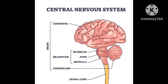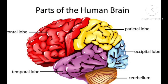The cerebrum is divided into four lobes. The names of the lobes are: frontal lobe, parietal lobe, temporal lobe, and occipital lobe. The frontal lobe is just present behind the forehead. The parietal lobe is found on the side of the head near the ears. Below the parietal lobe we have the temporal lobe, and at the back we have the occipital lobe.